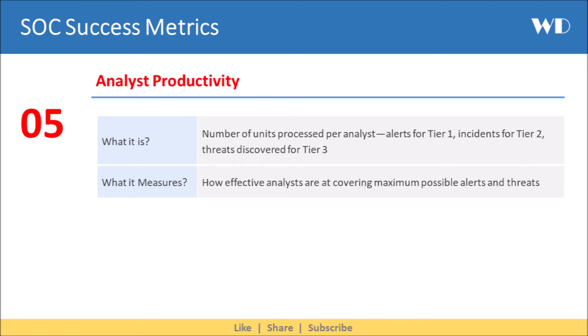Next we have Analyst Productivity. It is the number of units processed per analyst — that is, alerts for Tier 1, incidents for Tier 2, threats discovered for Tier 3. It helps you measure how effective analysts are at covering the maximum possible alerts and threats.